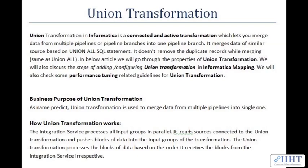The business purpose of the transformation: as the name predicts, Union Transformation is used to merge data from multiple pipelines into a single one. The integration service processes all input groups in parallel. It reads sources connected to the Union Transformation and pushes blocks of data into the input groups. The Union Transformation then processes the blocks of data based on the order it receives them from the integration service.